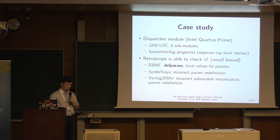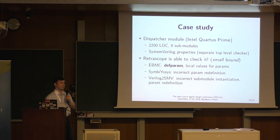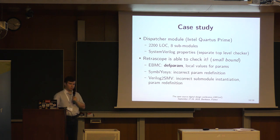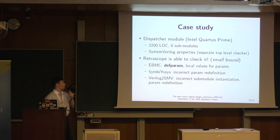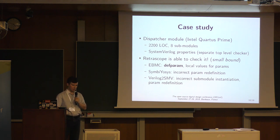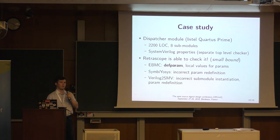We also took a case study using a dispatcher model from Intel Quartus Prime Suite — 2,200 lines of code with eight sub-modules. Our customer provided a top-level checker with a number of SystemVerilog properties. Unfortunately, only Retroscope was able to check them, but with a small bound of about 10 ticks. Other tools were unable to parse the dispatcher code. EBMC reported that it doesn't support defparam construction and doesn't support local values for parameters. Symbiosis had some issues with parameter definitions, and so did Verilog to SMV.